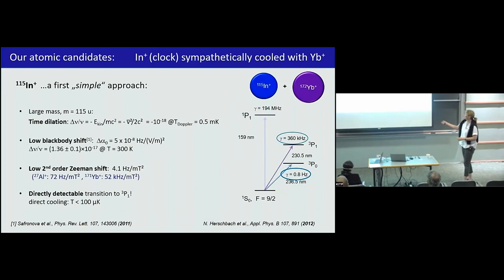We love heavy ions. Heavy ions give you a very low time dilation, not like magnesium. Indium, for instance, is a very heavy ion. If you just cool it at the Doppler limit, so no ground state cooling, you already end up at a time dilation shift of 10 to minus 18. That's wonderful, super simple and really controllable. Black body radiation shift is one of the lowest you can imagine.